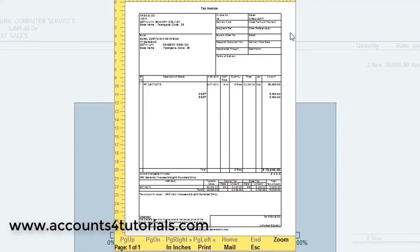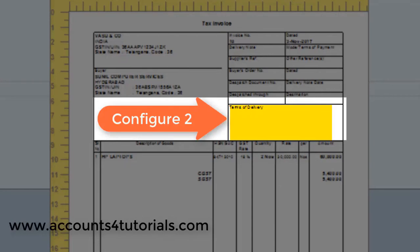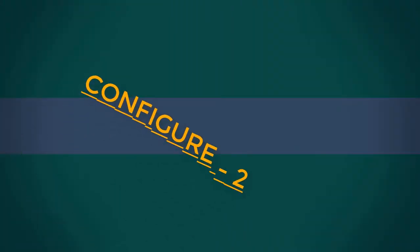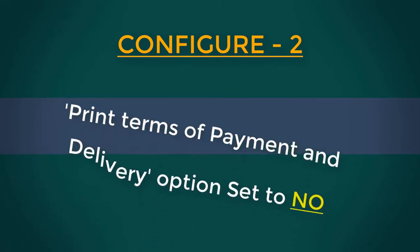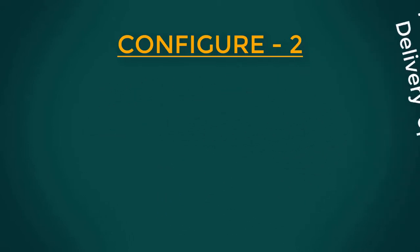Let's go to Configure number 2: Print Terms of Payment and Delivery option set to No.